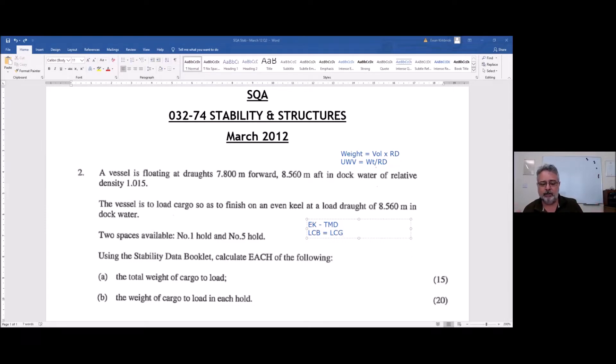Anything else pop into mind? Even keel, all the drafts are the same, no trim, TMD. TMD means that you can access your hydrostatics. So that gets you through the front door of your hydros. I'm going to finish even keel, 8.560, that's the same as the aft draft.